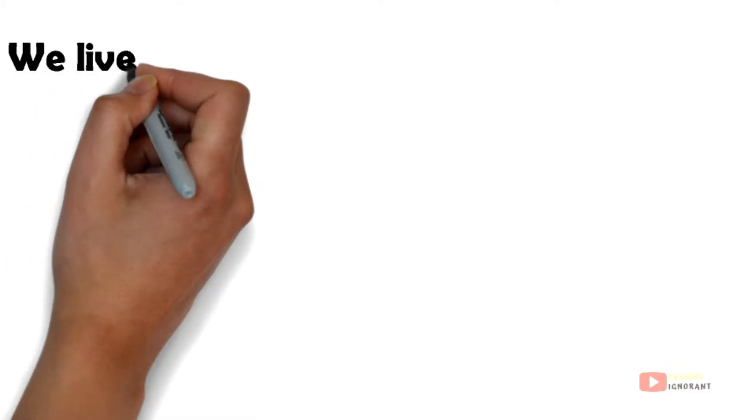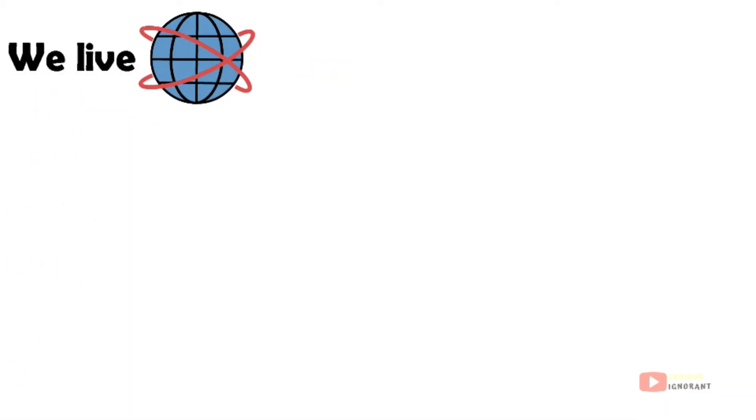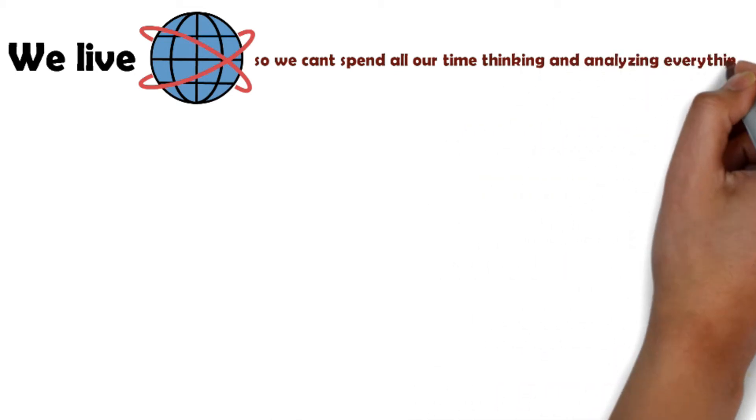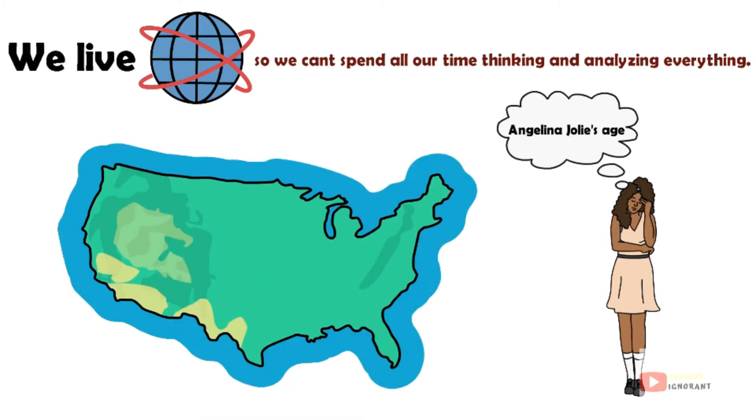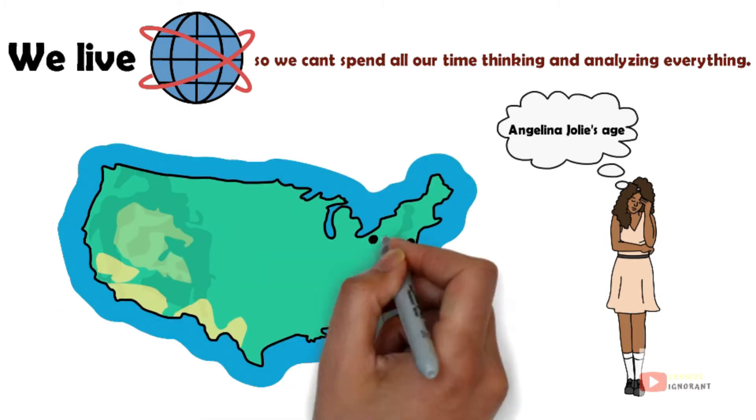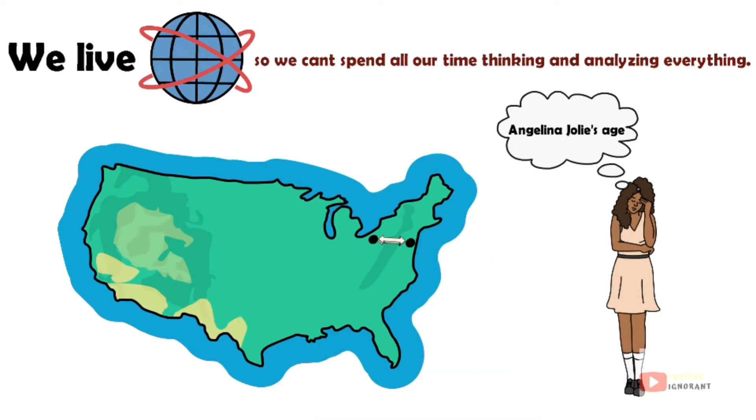We live in a complicated world, so we can't spend all our time thinking and analyzing everything. When we have to make judgments, such as guessing Angelina Jolie's age or the distance between Cleveland and Philadelphia, we use simple rules of thumb to help us. Although they are helpful, their use also leads to systematic biases.